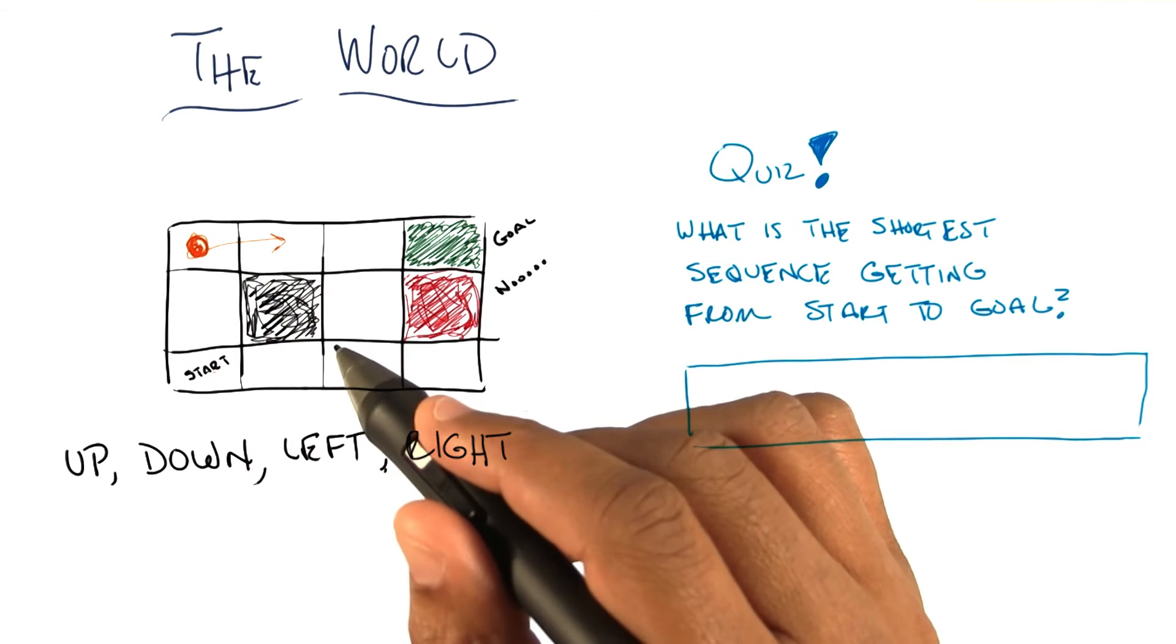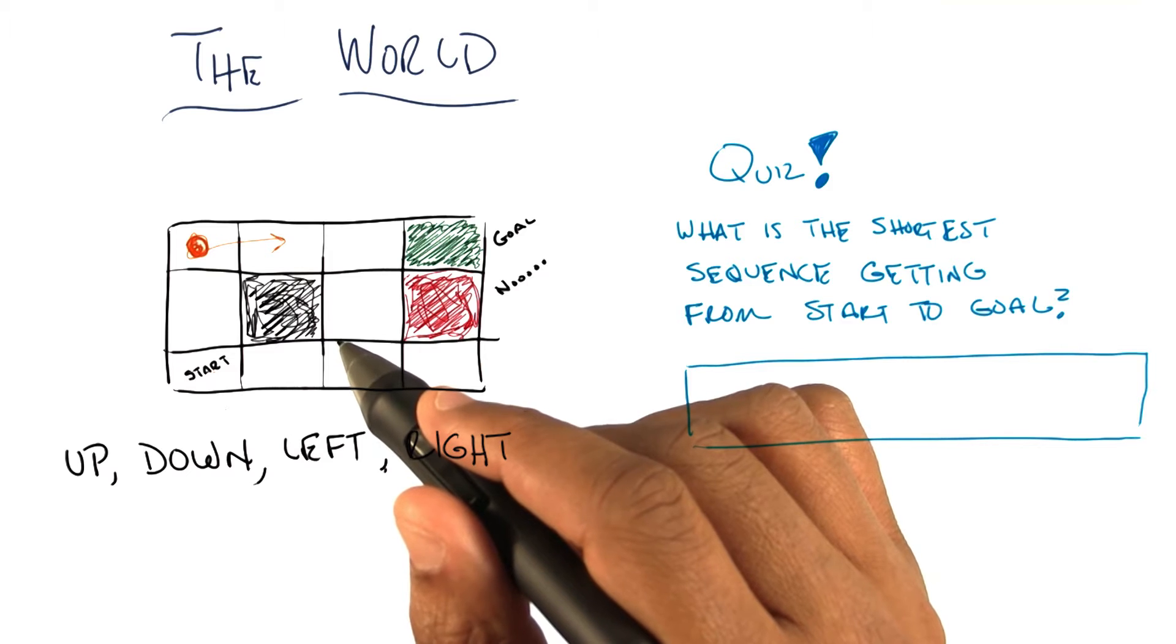But if you go right, you do actually end up in the next square. Got it? I think so.